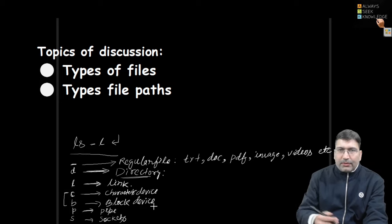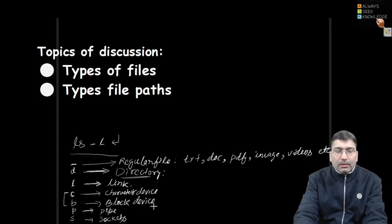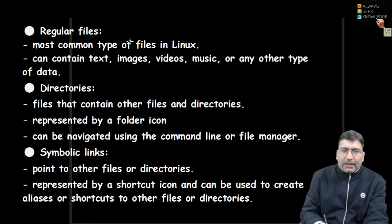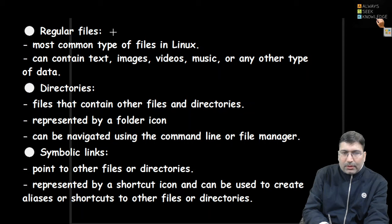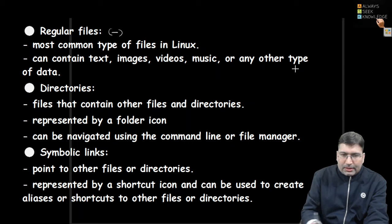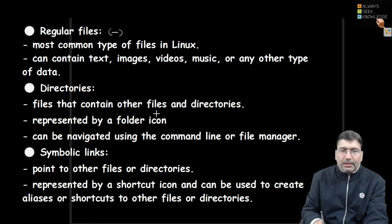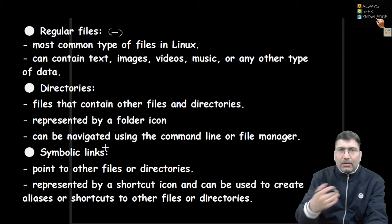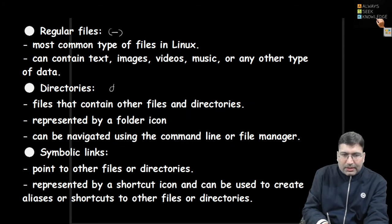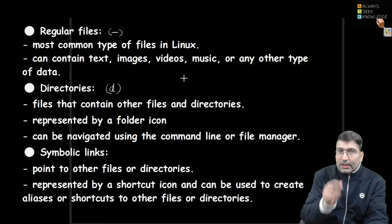So these are the different types of files. Quickly reviewing them: a regular file is the most commonly used file in Linux. It contains text, images, videos, music, or any other data type. In ls -l the regular file's first character displays as a minus sign or hyphen. Directory files contain other files or directories, represented by a folder icon and used to navigate. The very first character 'd' appears in ls -l output for directories.